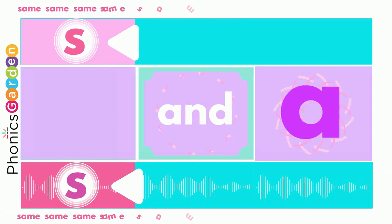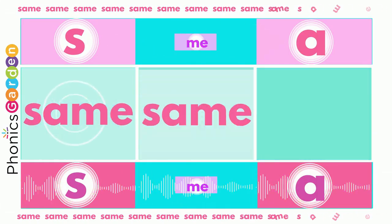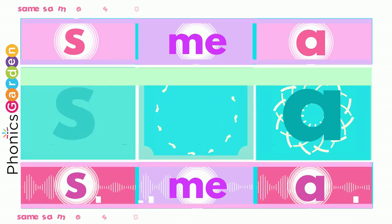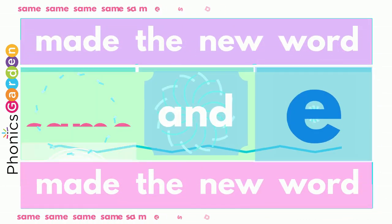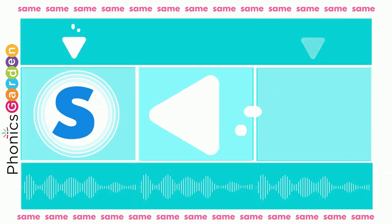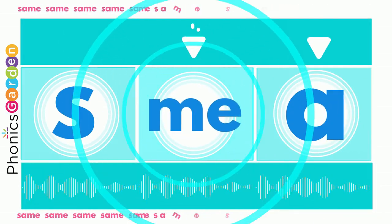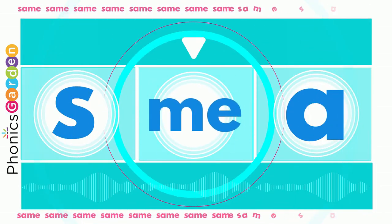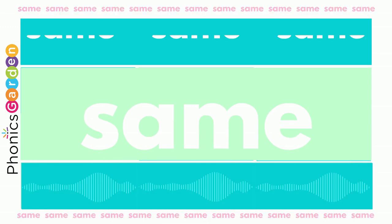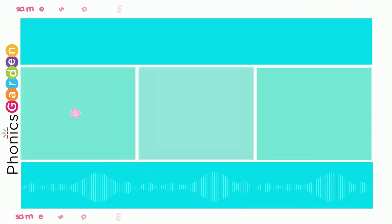S-A-M-E, same, same, same. Use the S, use the A, end it with M-E. Now you've made the new word, same for me.